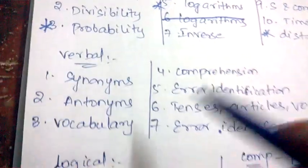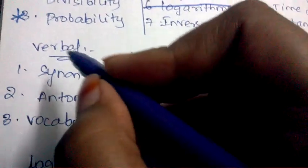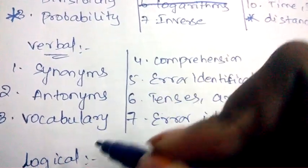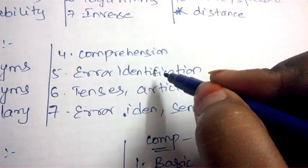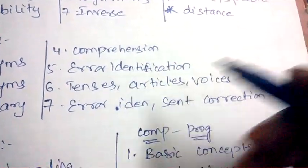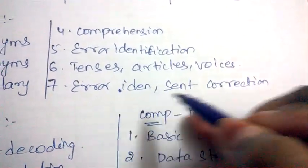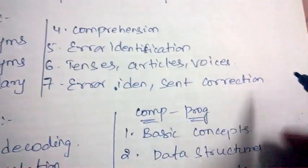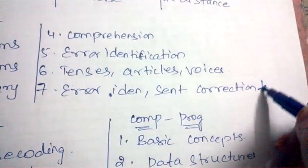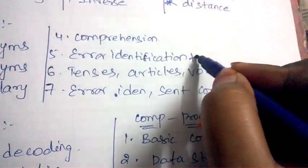Now let's see the verbal portion, which is synonyms, antonyms, vocabulary, error identification, reading comprehension, tenses, articles and voices, error identification and sentence correction. Out of which sentence correction is important, error identification is important.